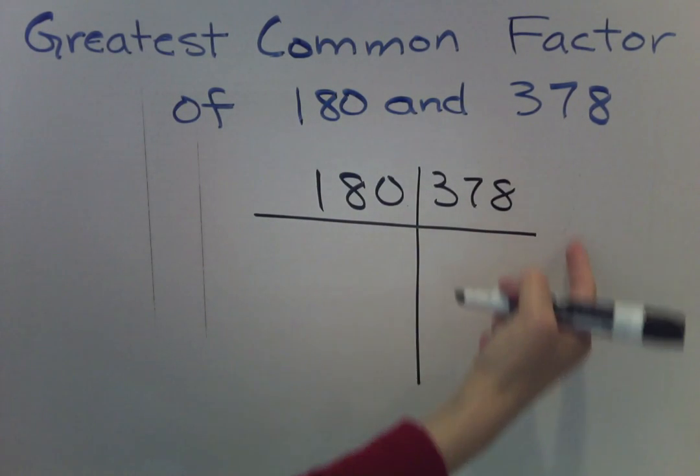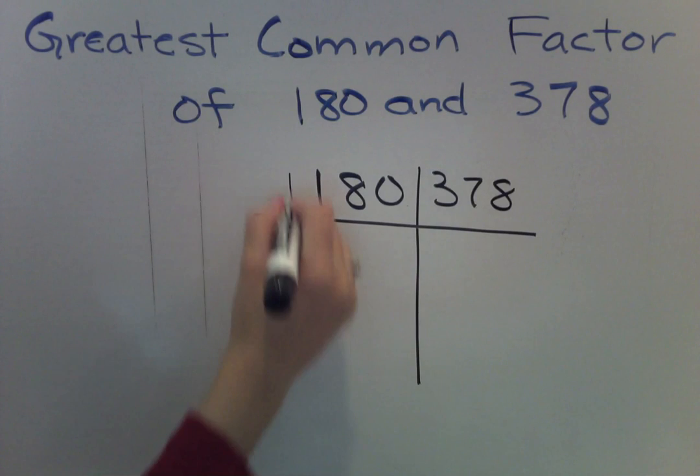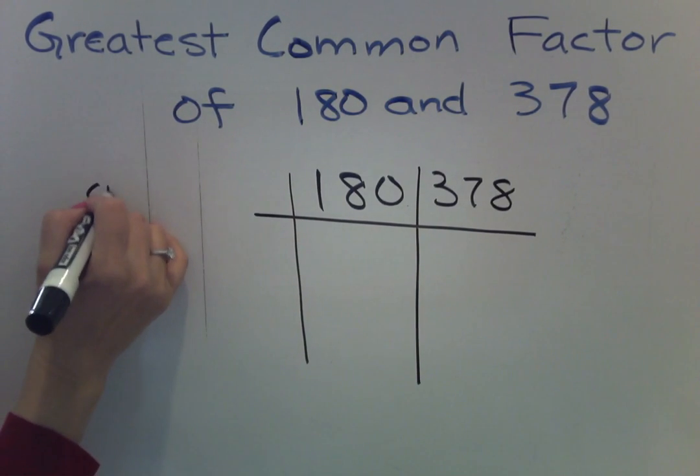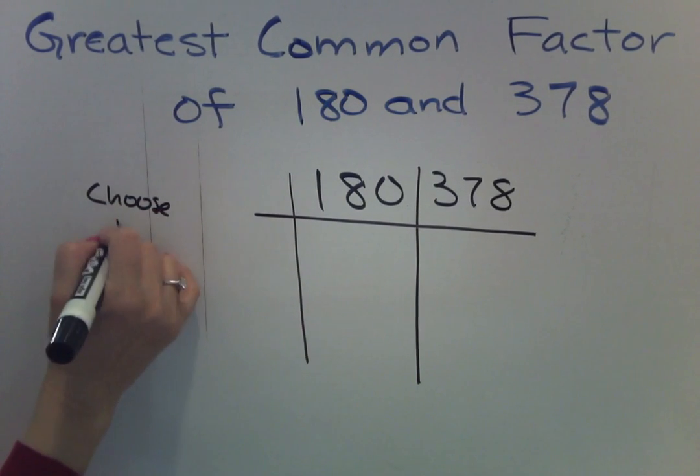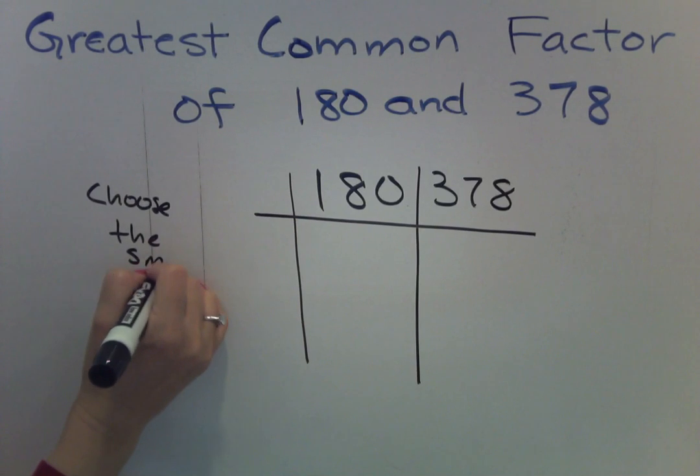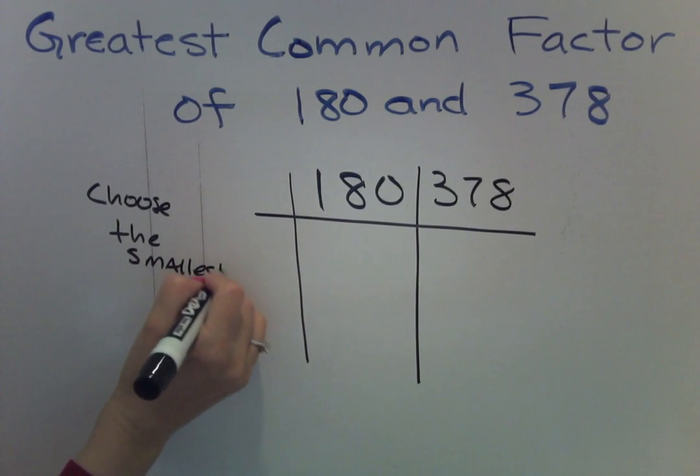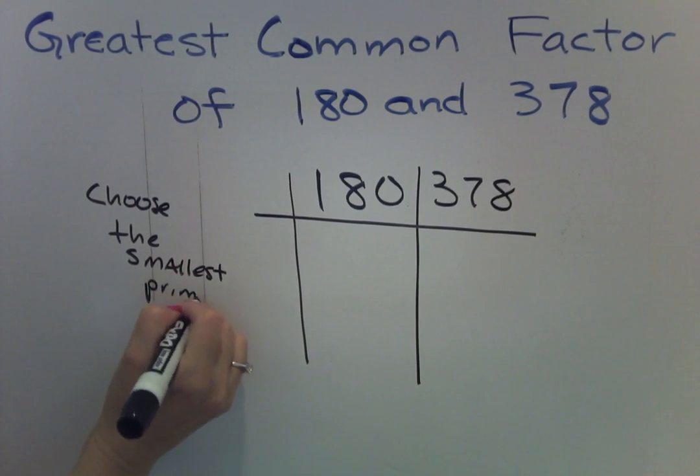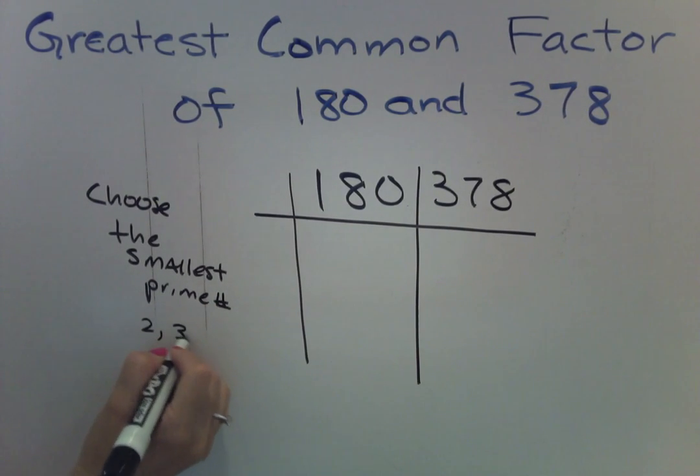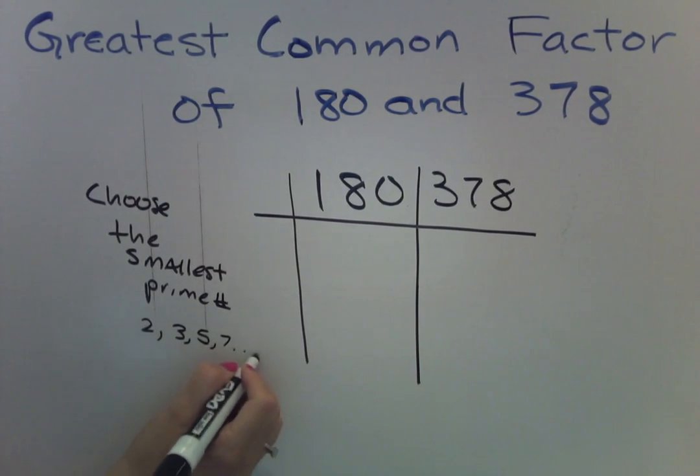Now if there's a third number, you can go ahead and make a third column. And then on this side we are going to choose the smallest prime number. And I'll just list them over here so we know what we can choose from.